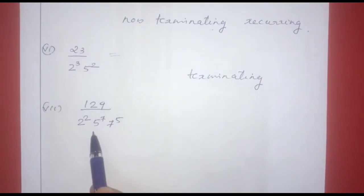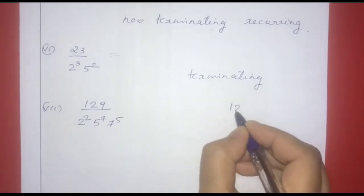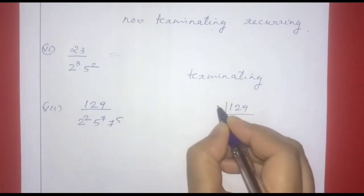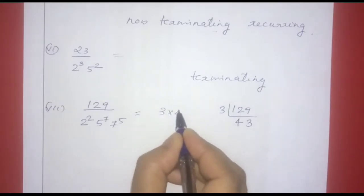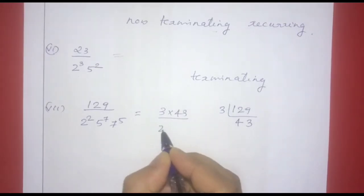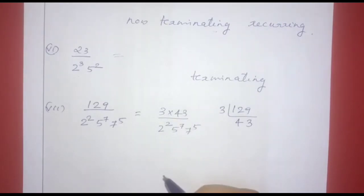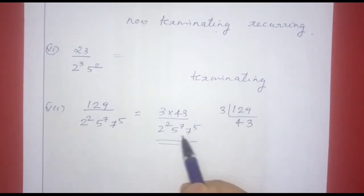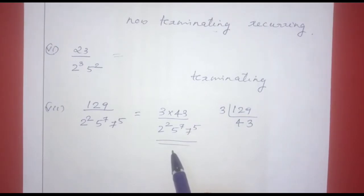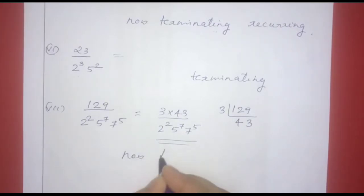Next one: 129 divided by 2 squared into 5 raised to 7 into 7 raised to 5. That equals 3 into 43 divided by 2 raised to 2 into 5 raised to 7 into 7 raised to 5. Since the denominator contains 7 as a factor, it is non-terminating repeating.